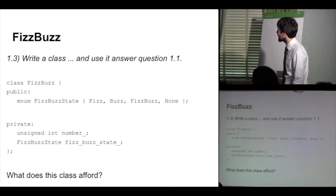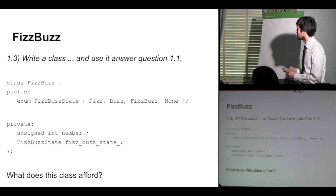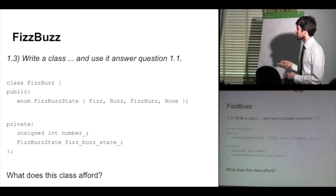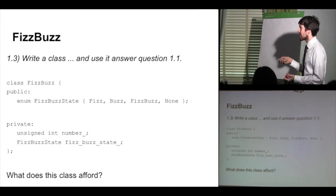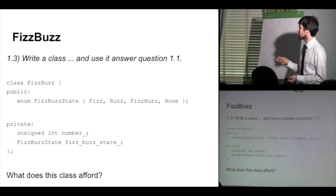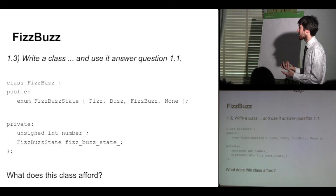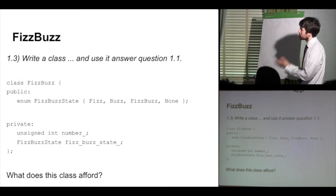Going back to FizzBuzz: for question one, write a class and use it to answer the question. The suggestion was to create a class with an enum type — a variable where the values it can take on are just named things like FizzBuzz, Fizz, Buzz, and None — but they are under the hood just integers. This is an abstraction away from integers so we can refer to them in a more natural way. The class should have two private variables: number and FizzBuzz state.